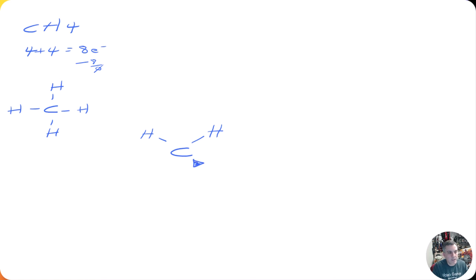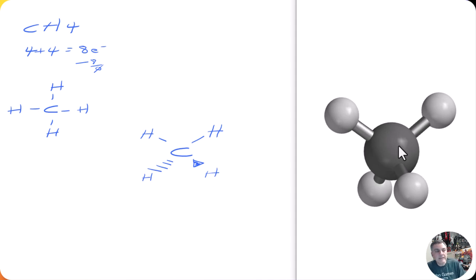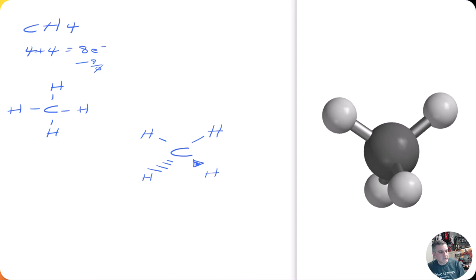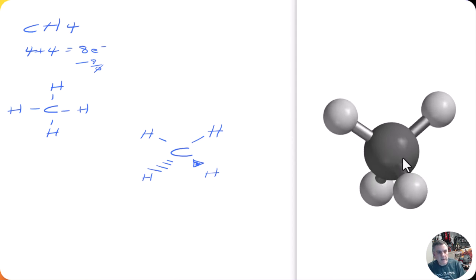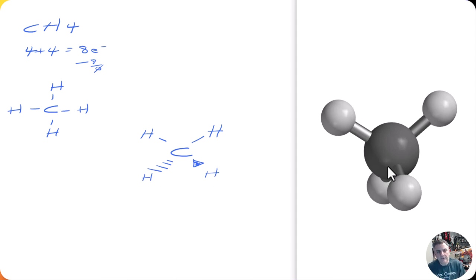To show one hydrogen coming out toward me, I use a filled wedge. To show one going behind me, I use a wedge composed of dashed lines. Bringing the molecule back, you can see this is one of the easiest ways to draw methane on a two-dimensional sheet of paper: three atoms in the plane using normal lines, the filled wedge for the hydrogen in front, and the dashed wedge for the one going behind.